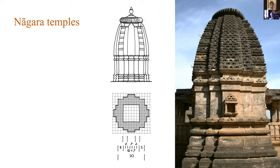Starting with Nagara, the North Indian tradition, the texts seem to have been gathered from central India, Malwa, where Bhoja's court was, and other parts of central and western India. There are three or four chapters which deal with Nagara, and they're all slightly different. I'd like to dwell on chapter 56, which itself has pieces in it from different sources.